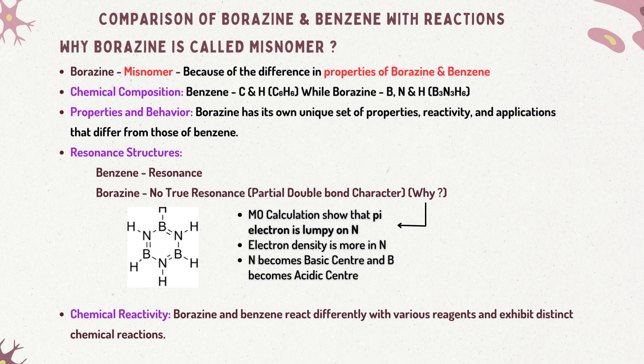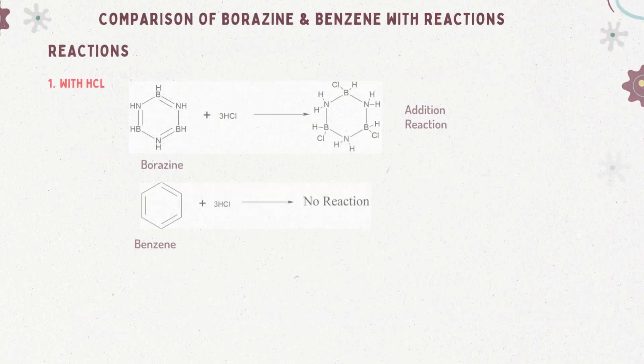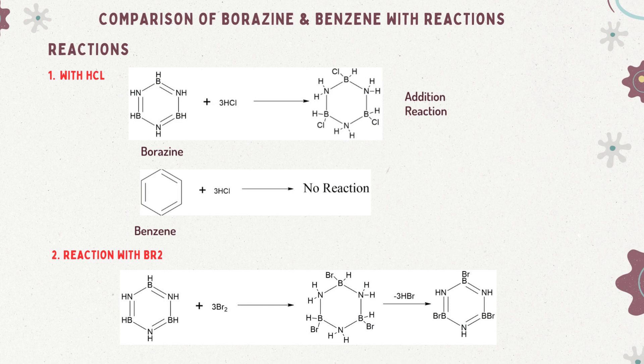Borazine and benzene demonstrate contrasting chemical reactivity, displaying unique behaviors when exposed to various reagents and undergoing distinct types of chemical reactions. Comparing the reactions of borazine and benzene, we observe that borazine reacts with HCl through an addition reaction, resulting in the formation of substituted borazine. However, in the case of benzene, no addition reaction occurs. Furthermore, when borazine reacts with bromine, it forms substituted borazine, while benzene reacts with bromine to yield bromobenzene.